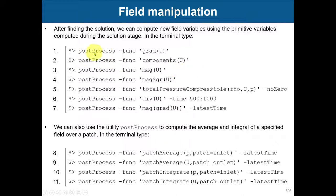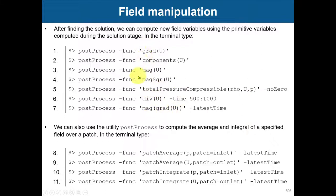For instance, if you want to compute the gradient of a field that already exists, you use `grad` followed by the field name — for example `gradP` or `gradU`. It will decompose the components of U, compute the magnitude, the magnitude squared, and total pressure. You can also compute the gradient of U and the magnitude of `gradU`. There are many available options.